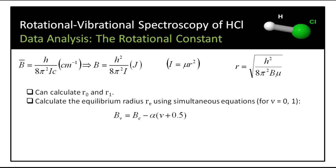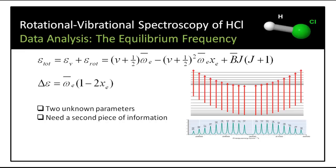Knowing B0 bar and B1 bar, we can solve for BE, the equilibrium rotational constant, using simultaneous equations, with V as equal to 0 and 1 respectively. Once we know BE, the equilibrium rotational constant, we can calculate the equilibrium radius in the same way as before.